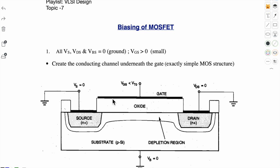For operation of the transistor it is important to have proper voltages at different terminals. Now let us see what happens when source, drain and body are at ground and we are applying a small positive voltage at gate.